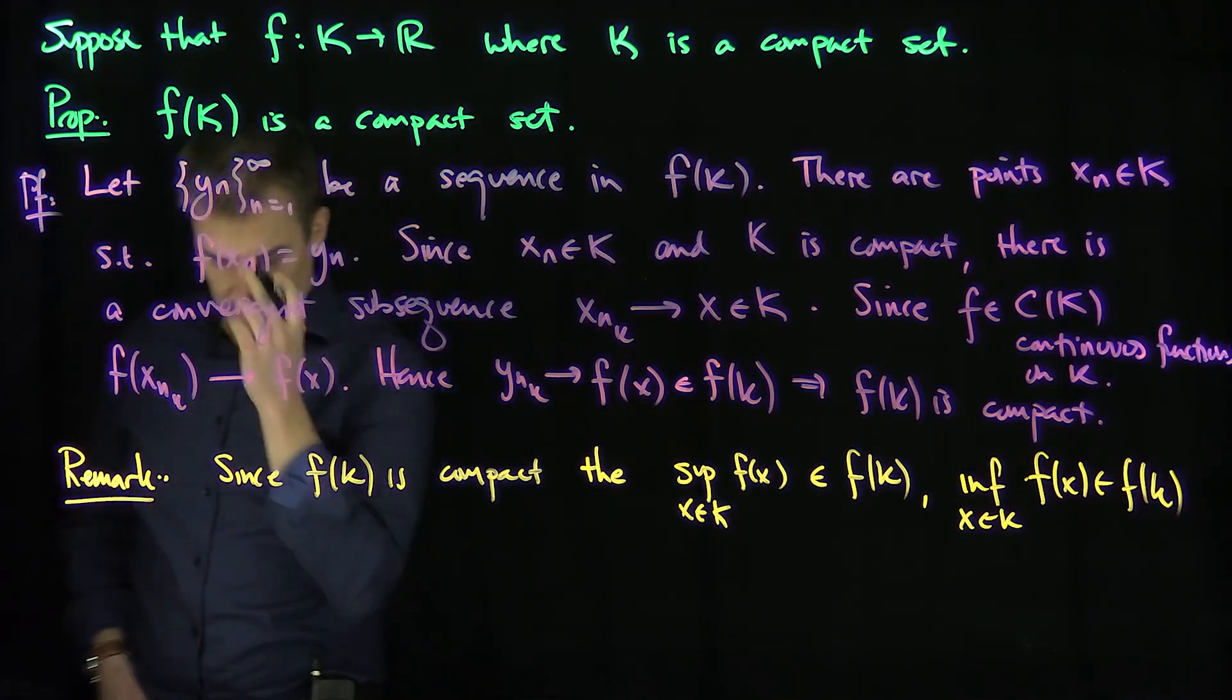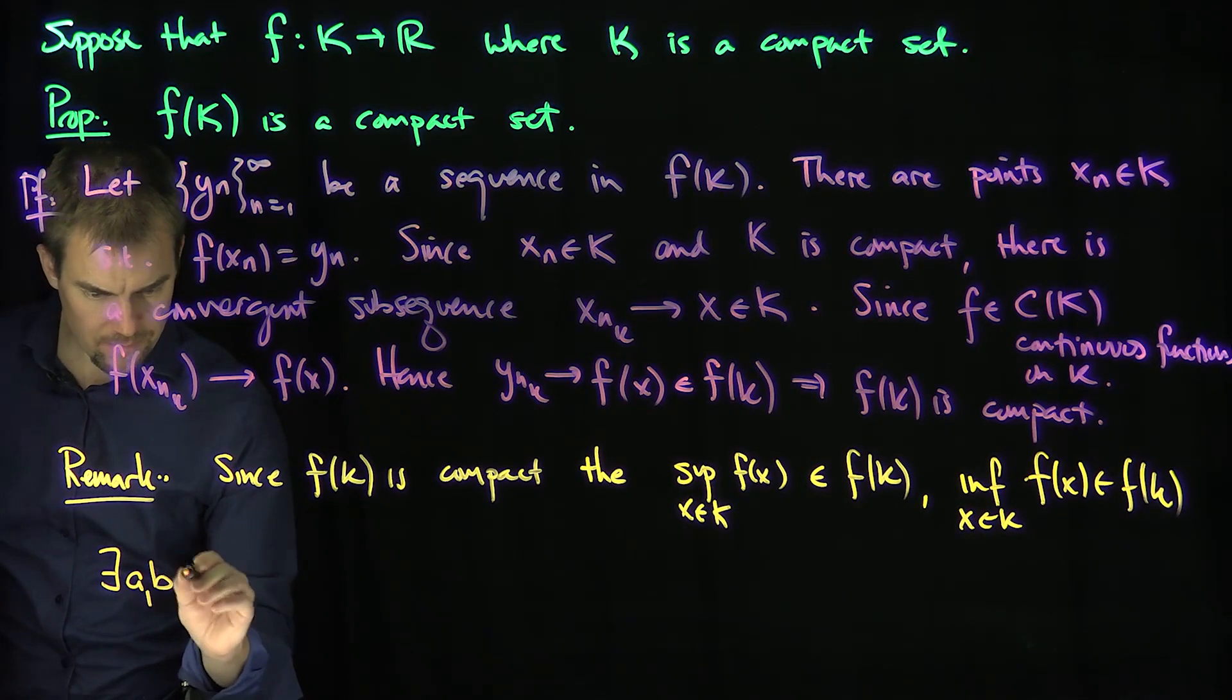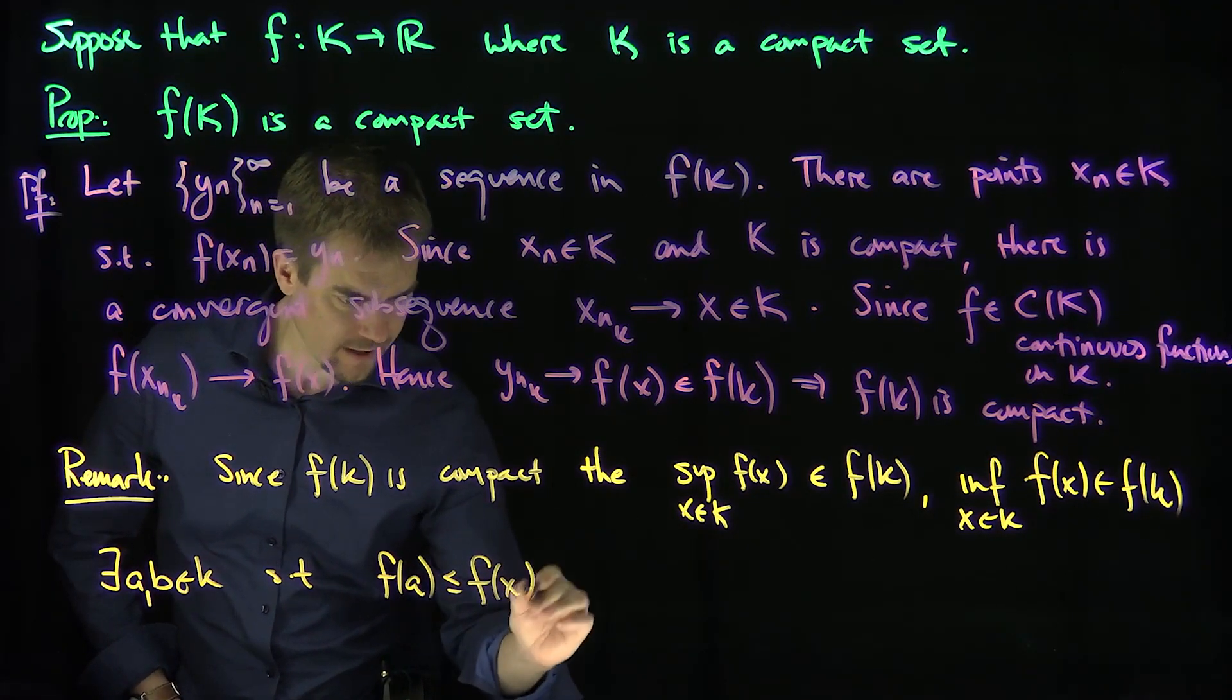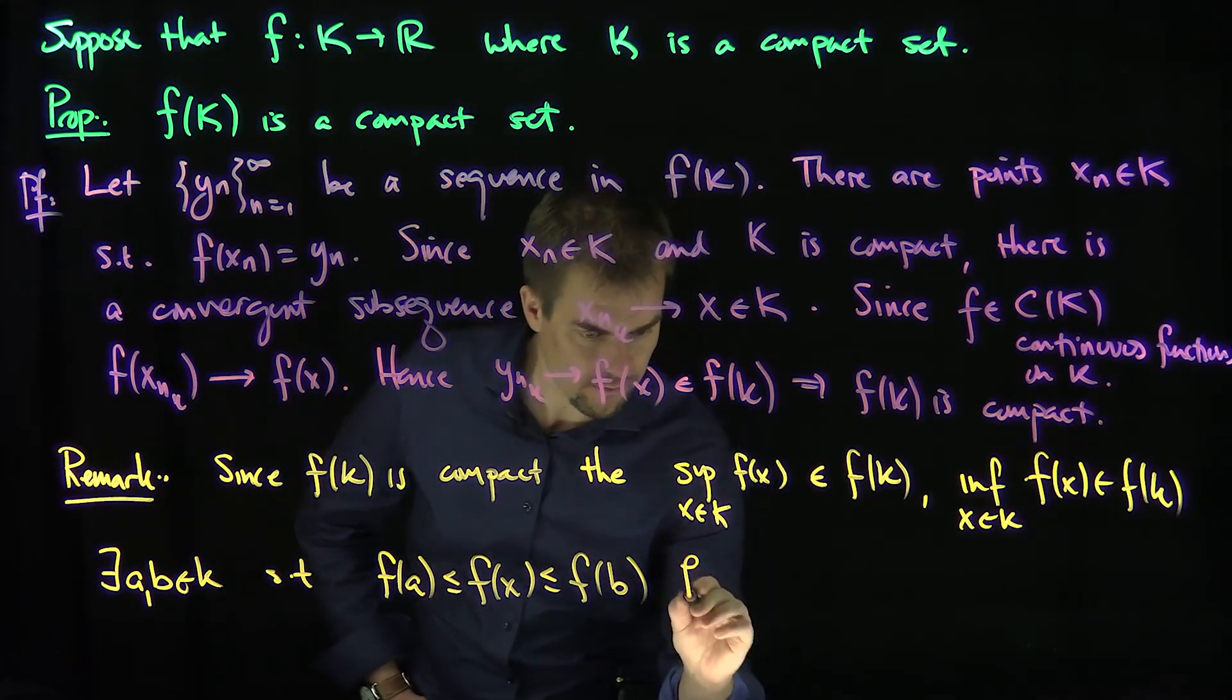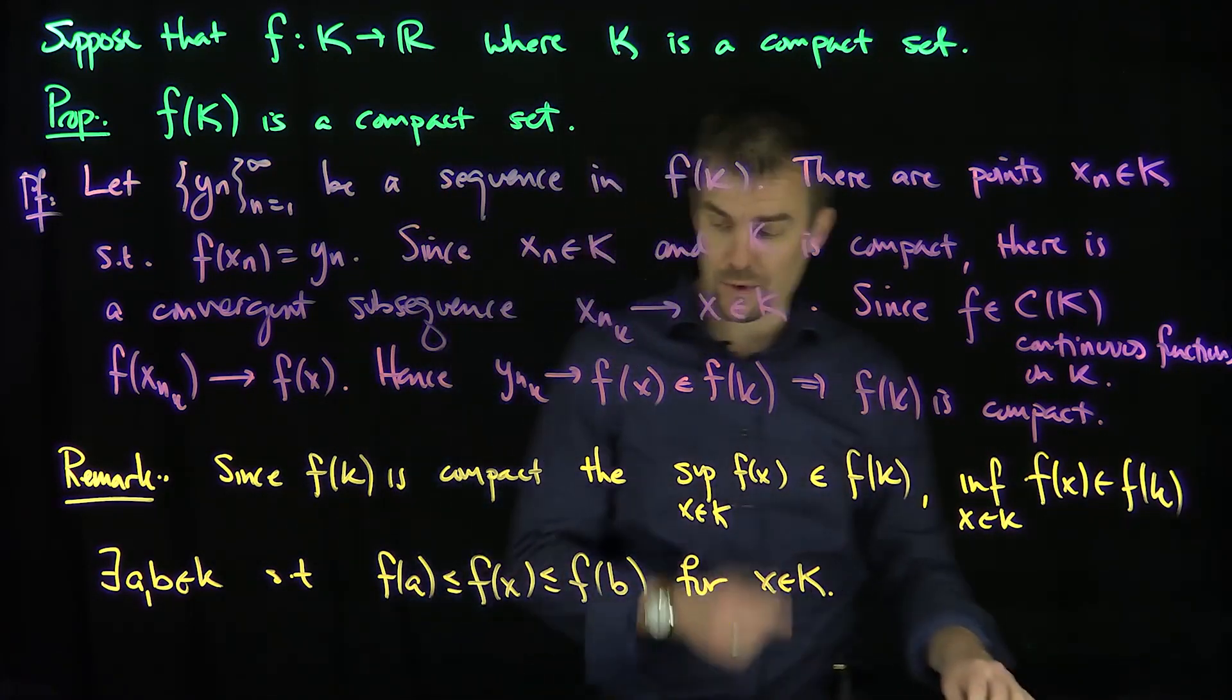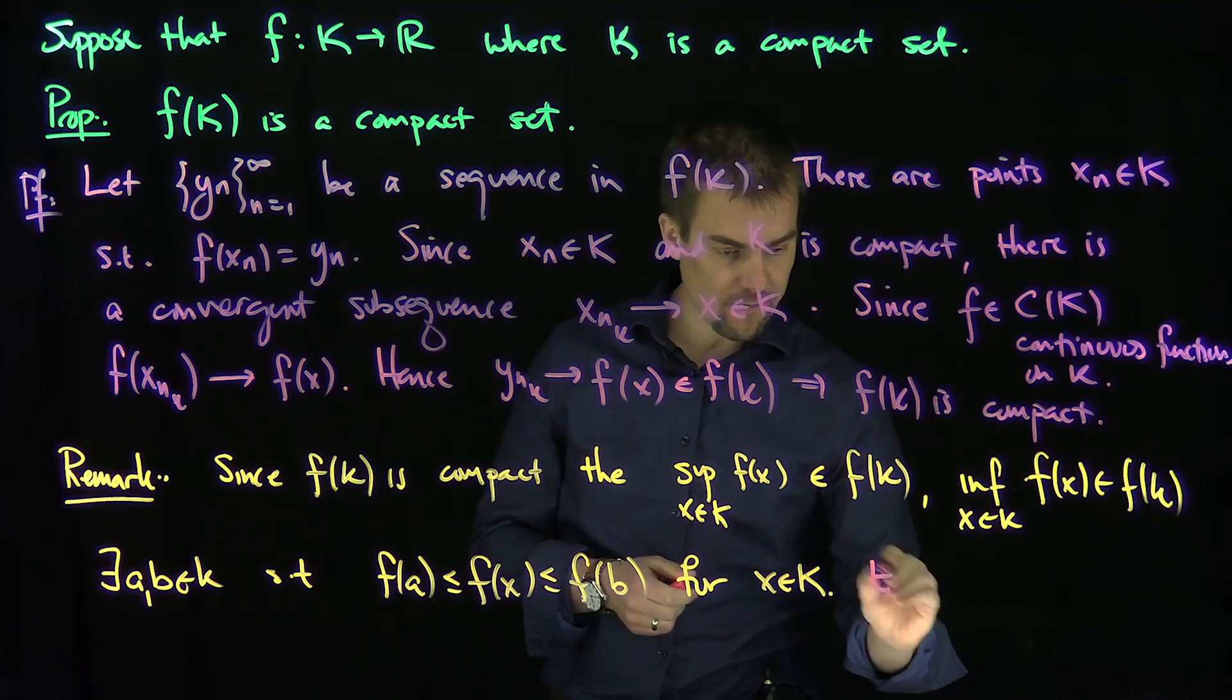This implies there exists a and b in K such that f(a) is less than or equal to f(x) is less than or equal to f(b) for all x in K. This is sometimes called the extreme value theorem. You can actually find points in that set where the minimum and the maximum, where the sup and the inf, are attained.